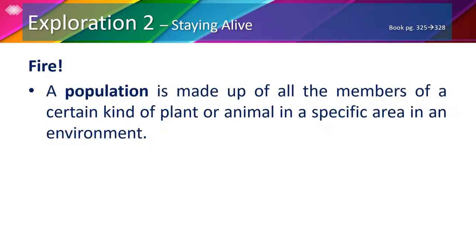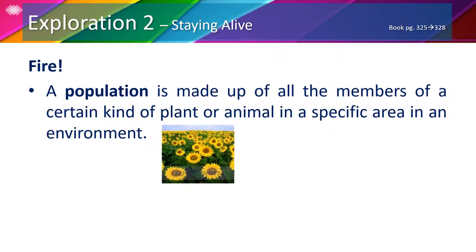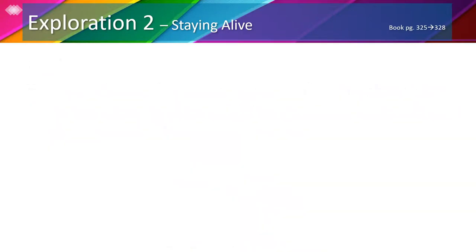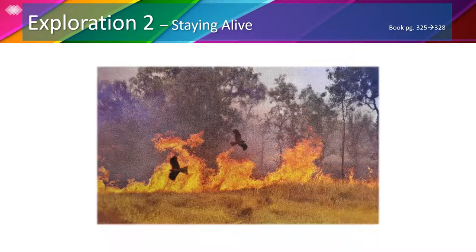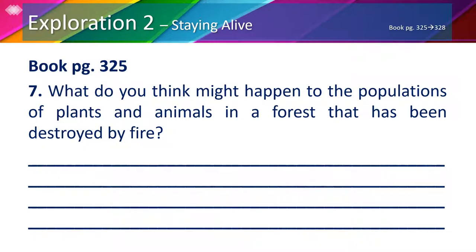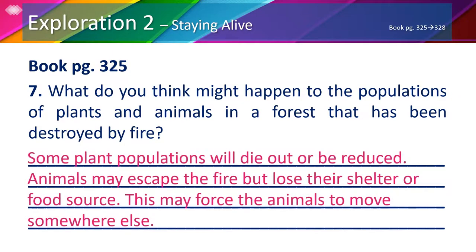A population is made up of all the members of a certain kind of plant or animal in a specific area in an environment. For example, a population of sunflowers, a population of pine trees, a population of giraffes, and a population of penguins. In your books page 325, we can see a picture of a forest fire. The grass is brown, which means it's dry, so the animals living in this environment are going to be affected. Some plant populations will die out or be reduced. Animals may escape the fire but lose their shelter or food source, which may force them to move somewhere else.